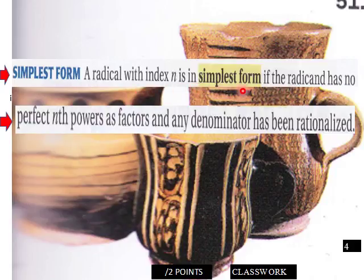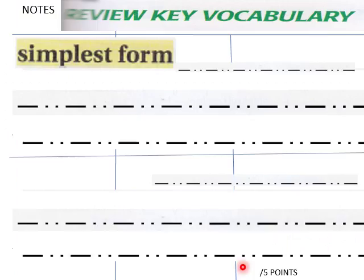A radical with index n is in simplest form if the radicand has no perfect nth powers as factors and any denominator has been rationalized. This is classwork page 4 on your classwork sheet.